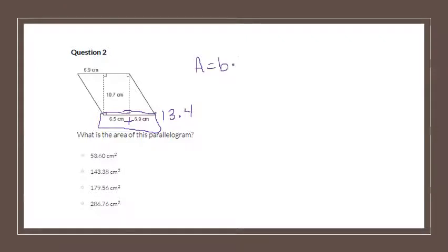So I know that I have base times height. So our base is 13 and 4 tenths. And our height that is perpendicular to the base is 10 and 7 tenths. So now I am going to multiply these two together. And I know that my area is 143 and 38 hundredths centimeters squared.